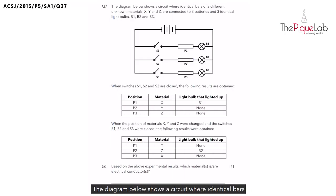The diagram below shows a circuit where identical bars of three different unknown materials X, Y, and Z are connected to the circuit. Now unknown materials means they can either be electrical conductors or electrical insulators.